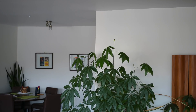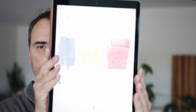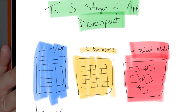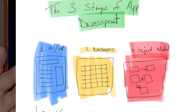In this vlog I'm going to talk about the three stages of app development. I use my new iPad Pro here and draw a diagram. There's step one, two, and three: step one is UI/UX, step two is database design, step three is object creation — the business objects which you write in your programming language of choice, whether it be PHP, Java, C#, Ruby, or whatever.